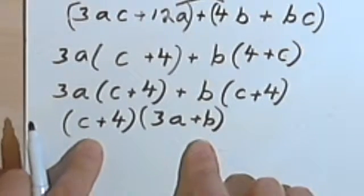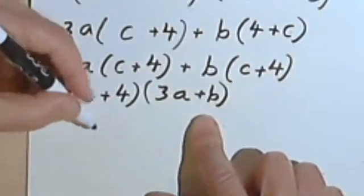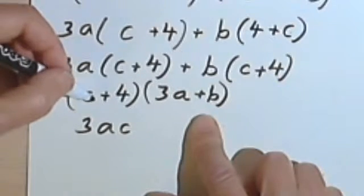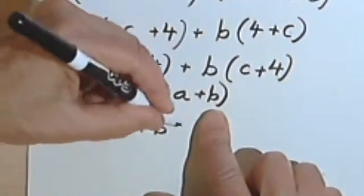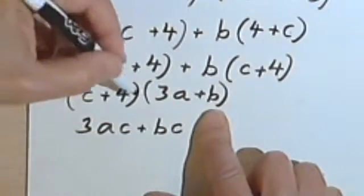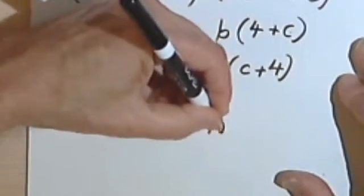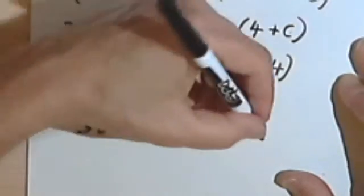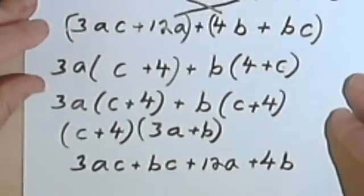Just to make sure, since I've moved a lot of things around, let's check that. c times 3a is 3ac. c times b is just going to be bc. 4 times 3a will give me a 12a. And 4 times b will give me a 4b.